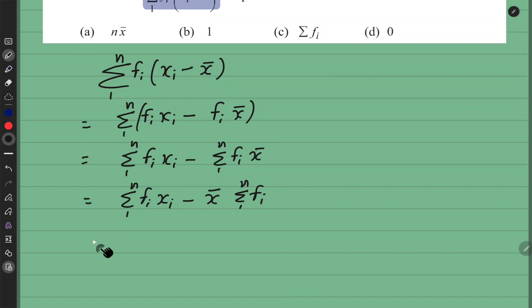Bas x bar ka formula yahaan laga denge hum. Summation 1 to n fi xi minus. Iska formula kya hota hai? Summation fi xi upon summation fi. Kiska? Mean ka formula. Iska mean ka formula likha haam ne. Baqi joh bhi tha ho likhi dhia. Summation fi. One to n sub me a jae ga. Summation 1 se leke n tuk hai.